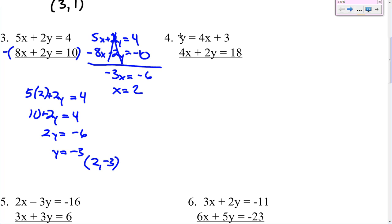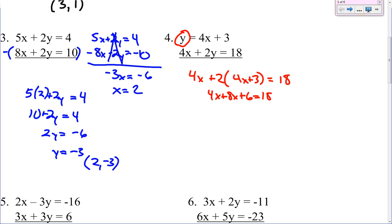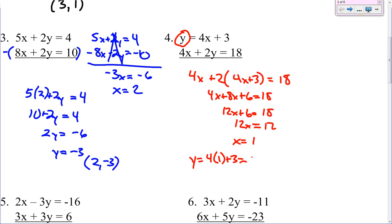Number 4. Check to see if any variables are by themselves — y is. Since it's by itself, we can substitute this into the second equation. This is 4x plus 2 times (4x plus 3) equals 18. Distribute: 4x plus 8x plus 6 equals 18. That gives us 12x plus 6 equals 18. Subtract the 6 over — 12x equals 12. Divide by 12 — x equals 1. Take that 1 and plug it back up top: y equals 4 times 1 plus 3. 4 times 1 is 4, plus 3 is 7. So the answer is (1, 7).